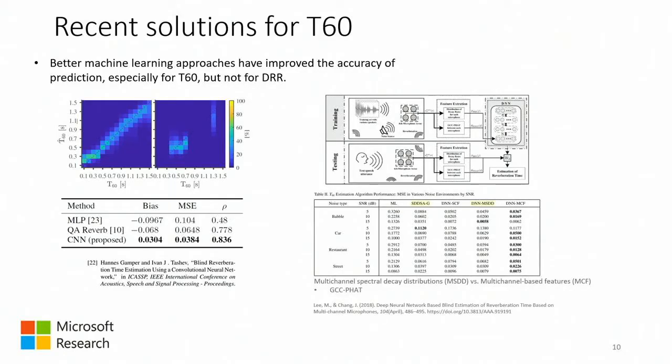Recently, machine learning approaches have improved T60 estimation. These are results from two papers — one from Hannes — and another that came out this year. Both use machine learning to predict T60 and show quite an improvement from previous methods, outperforming any of the 2015 algorithms. These approaches are quite new in spatial audio, representing early attempts that already produce considerable improvements.